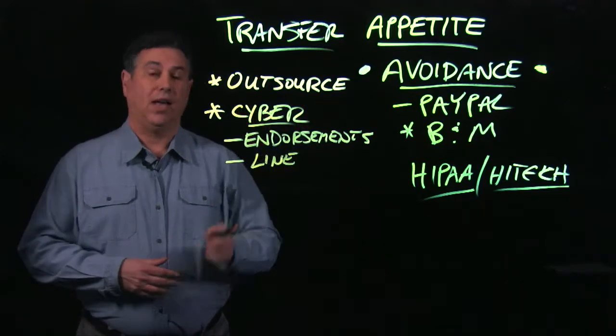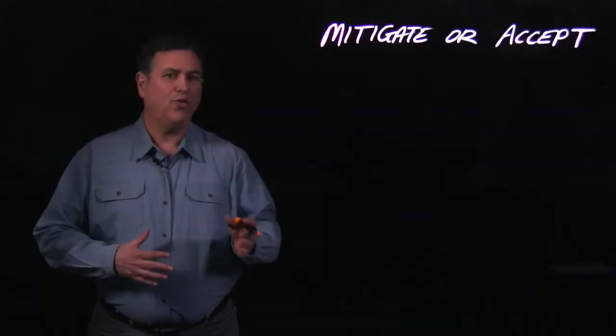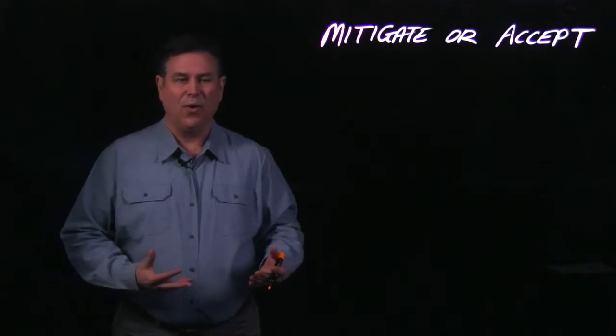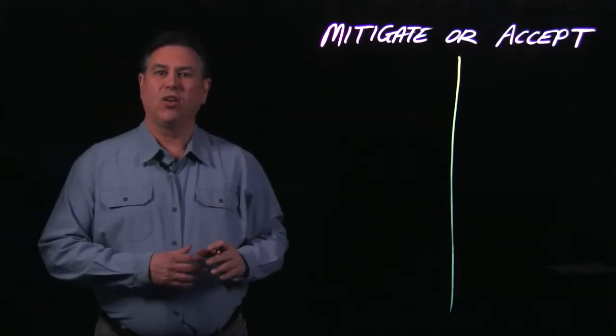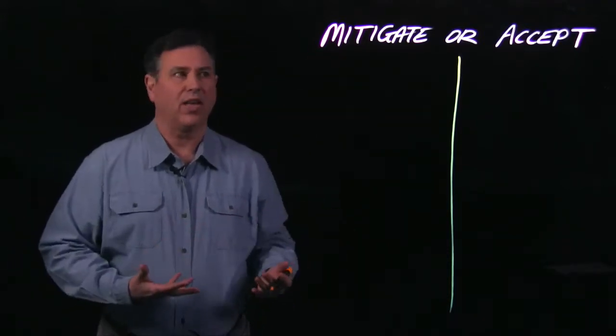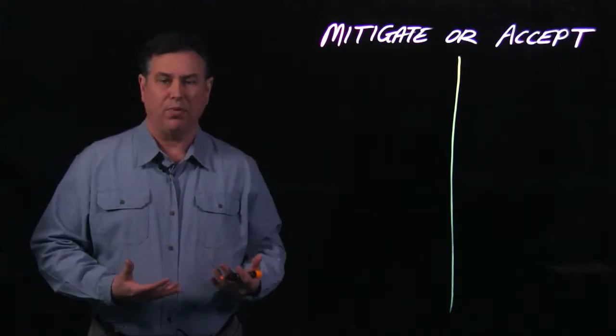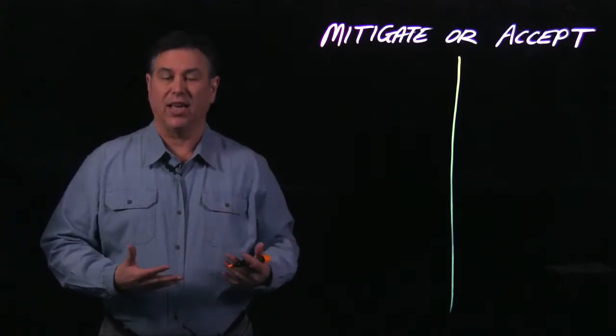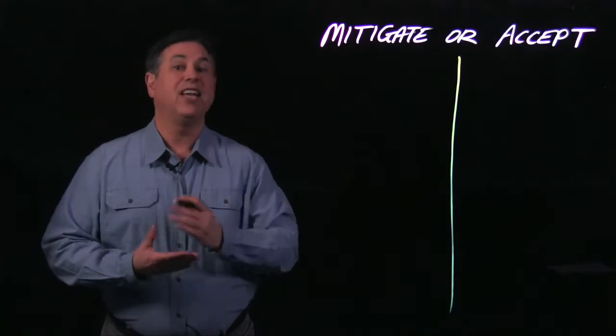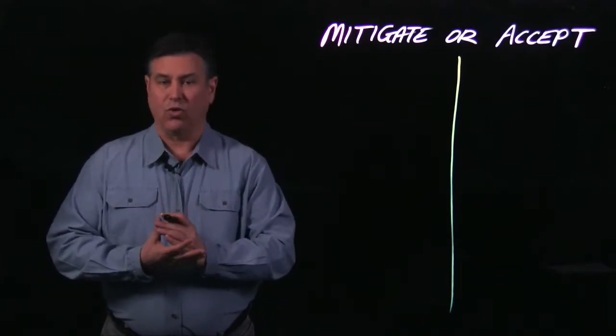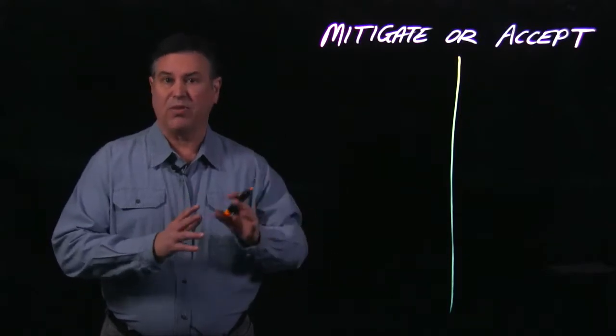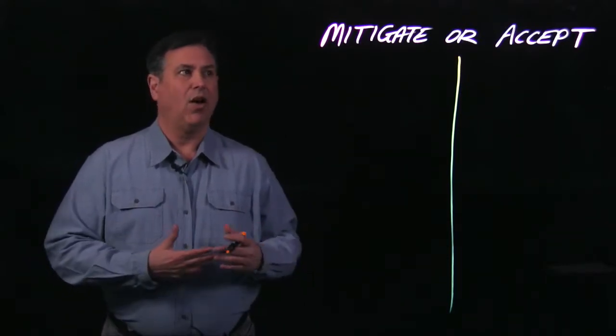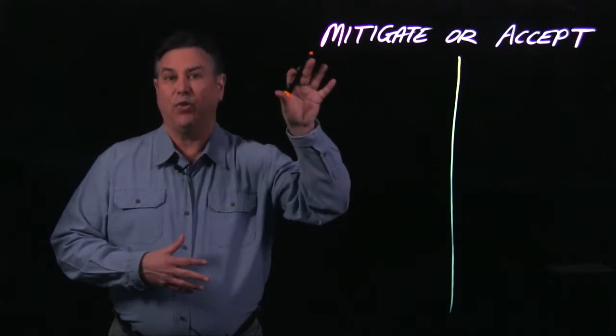Our next two forms of risk handling or risk treatment are to mitigate risk or accept the risk. Mitigation is really called risk reduction. These are the controls that you put in place as countermeasures: your administrative controls, your technical controls, your physical controls, also the other types like preventive. So the controls we put in place are what we use to mitigate risk.